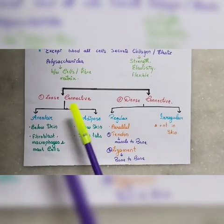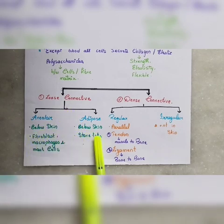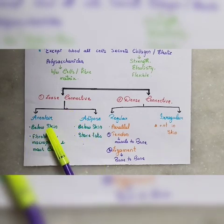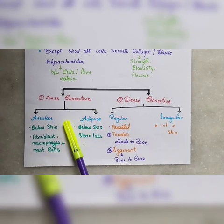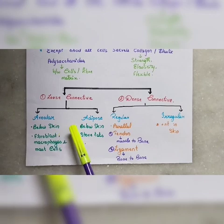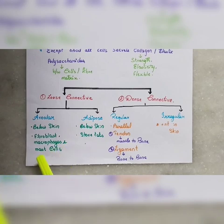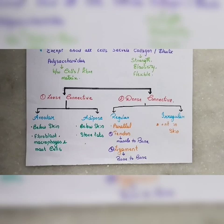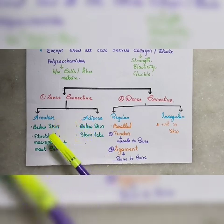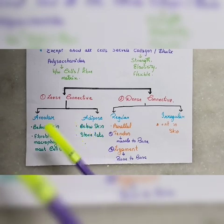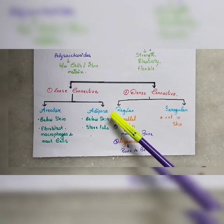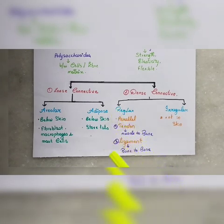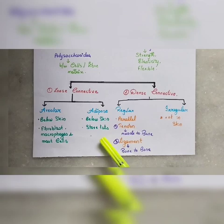First is loose connective tissue, which is mainly divided into two types: areolar and adipose. Areolar tissue has three types of cells: fibroblasts, macrophages, and mast cells. These cells support the immune system, blood clotting, and phagocytosis. They are found below the skin and other tissues. Adipose tissue stores fat and is found below the skin.